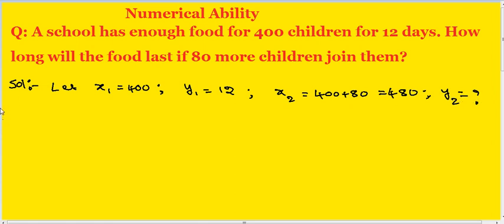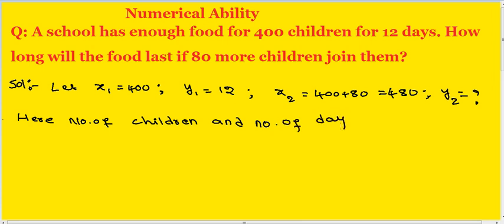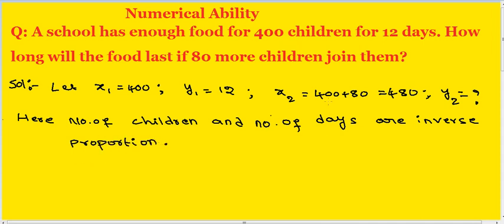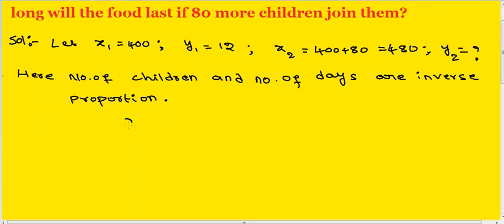Here, the number of children and the number of days are in inverse proportion. So the formula is: x1 divided by x2 equals y2 divided by y1.